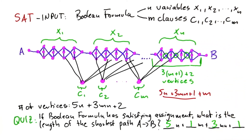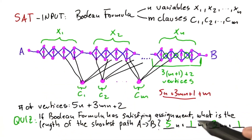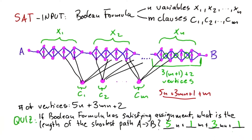We have shown that if the Boolean formula is satisfied, then we have a path of this length. Now we need to show the other direction as well: if we have a path of this length, then the Boolean formula has a satisfying assignment. We need to show both directions because the requirement for reduction is that our new instance is a yes-instance if and only if the Boolean formula has a satisfying assignment. We have shown the "if"; now we need to show the "only if."